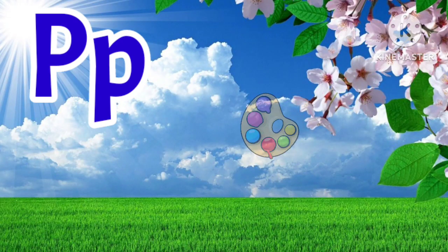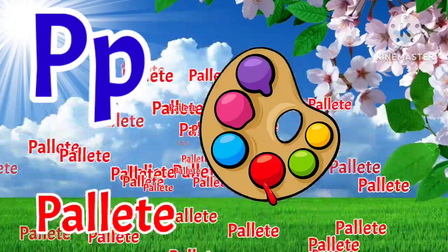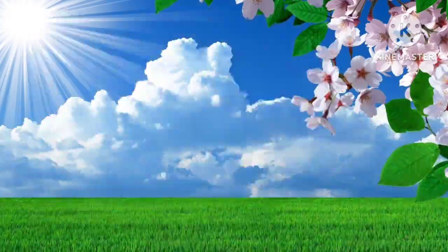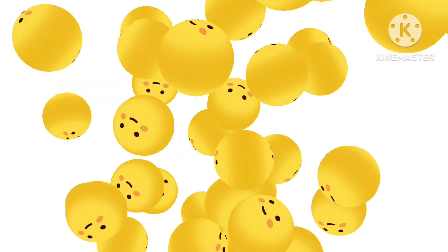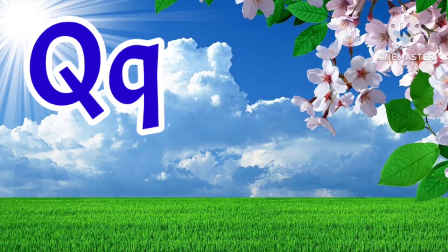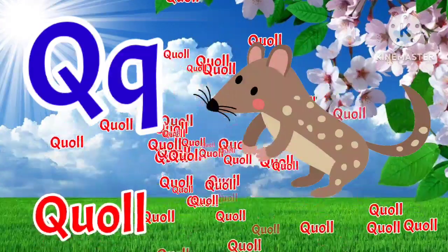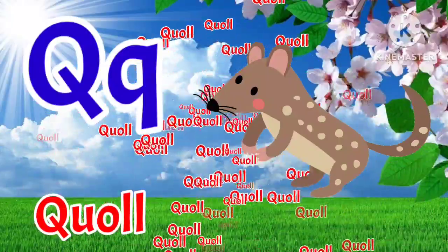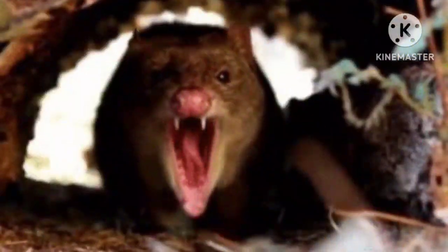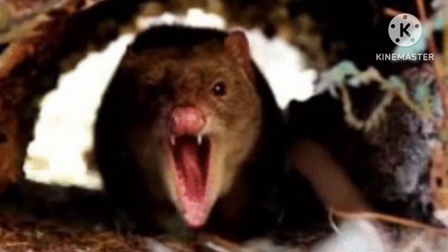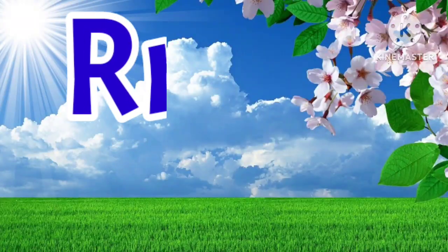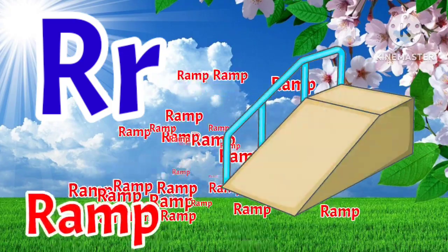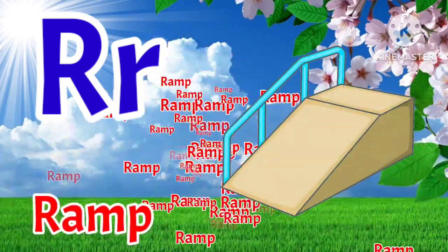P. P is for Parrot. P is for Parrot. Q. Q is for Quail. Q is for Quail. R. R is for Ramp. R is for Ramp.